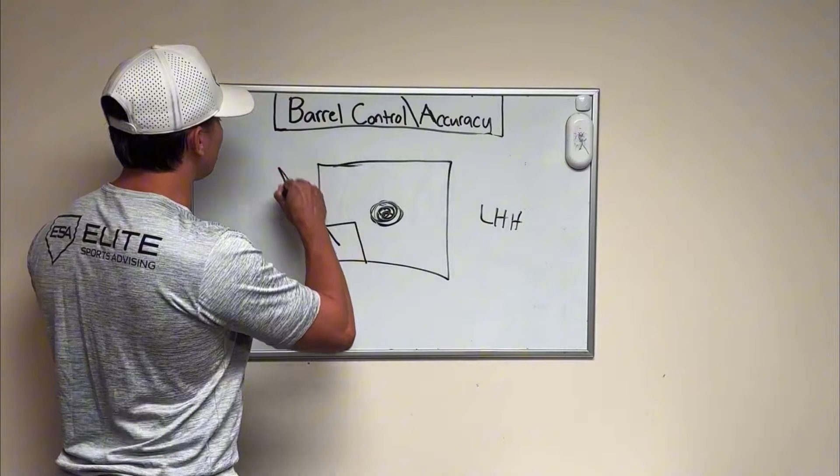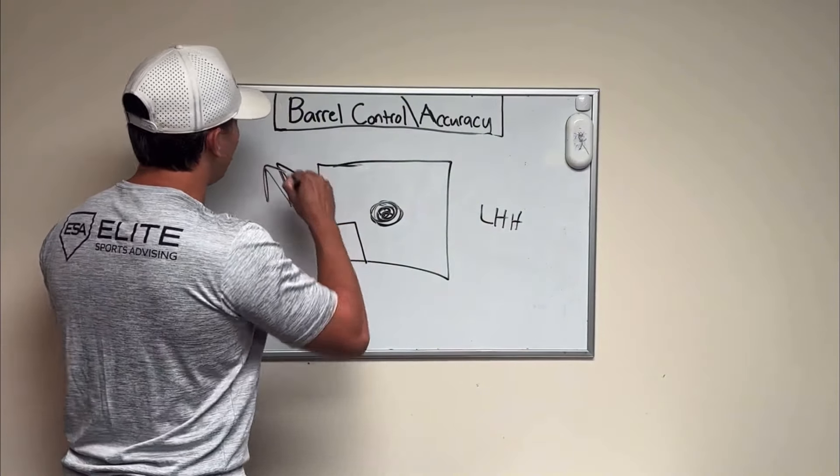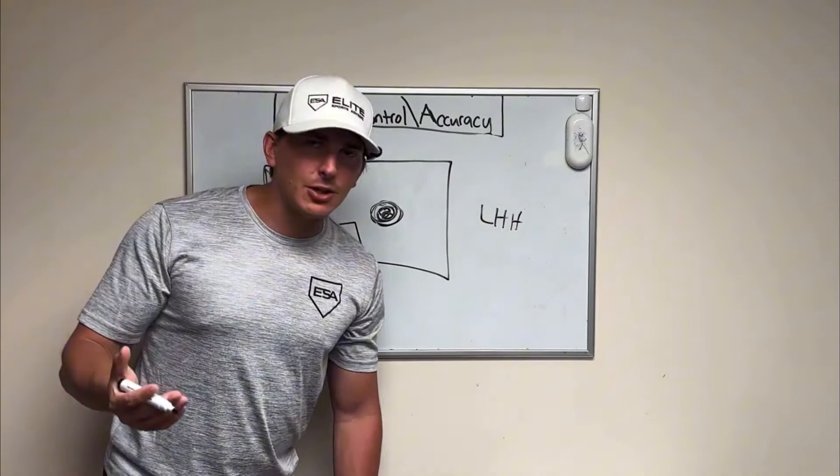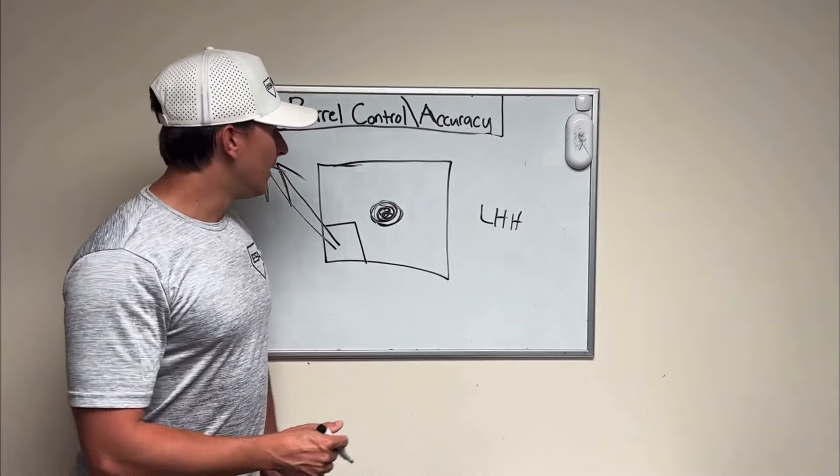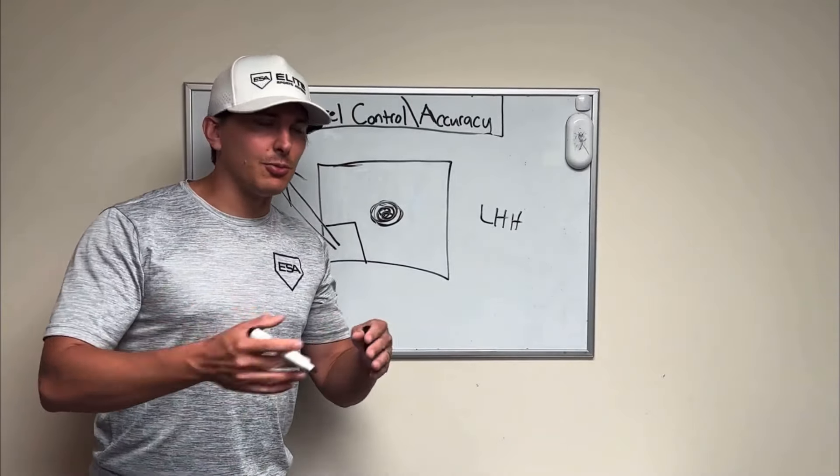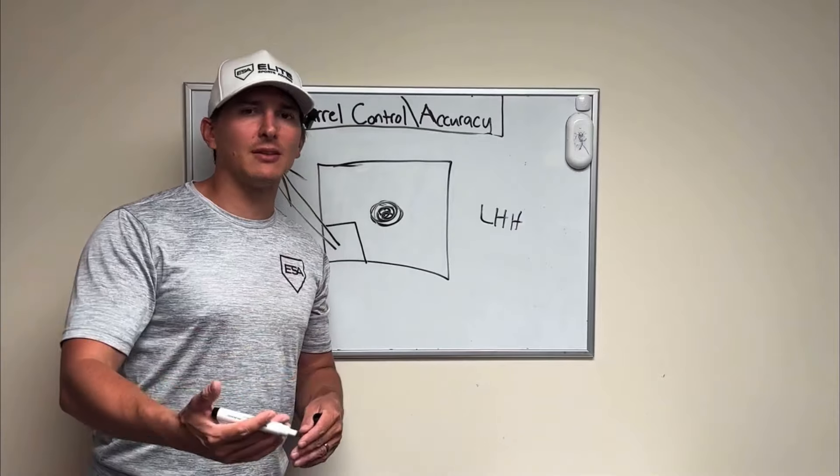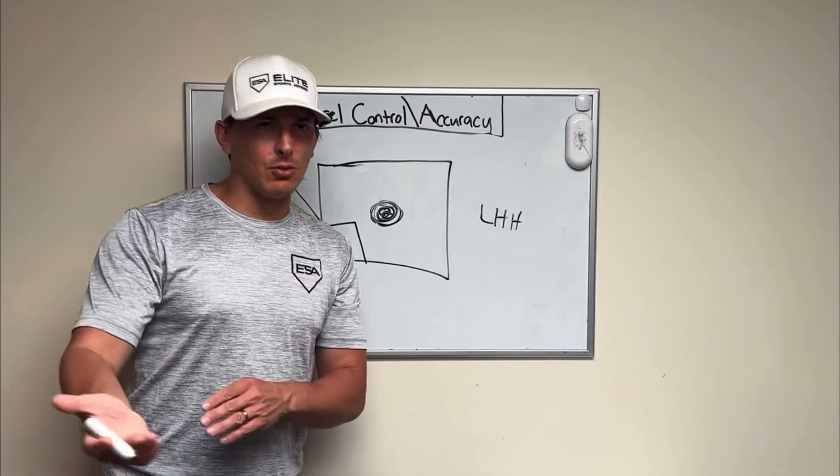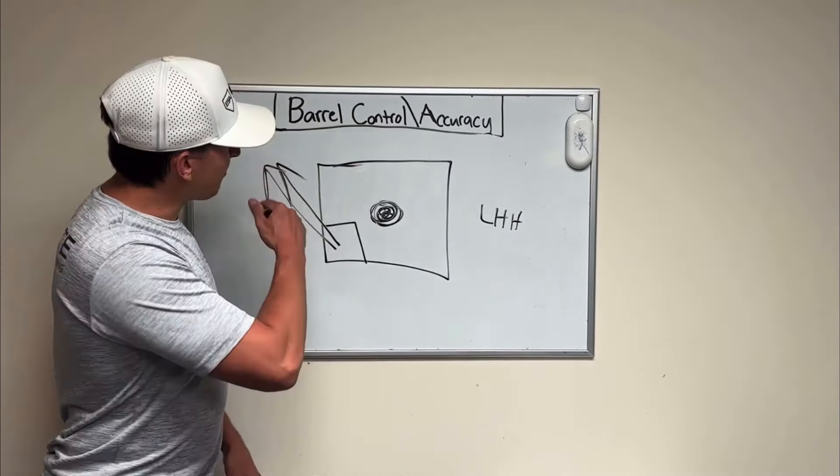So you can practice this. We're trying to do line drives, right? Backspin line drives into left field, left center gap, opposite field gap if you're a right-handed hitter. I was a left-handed hitter, so it's always easy for me to kind of do these things from a lefty's perspective. Obviously just do the reverse if you're a righty. We're trying to get backspin.